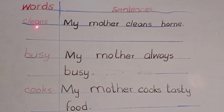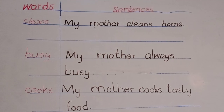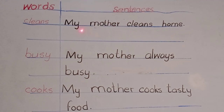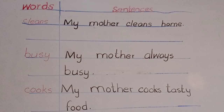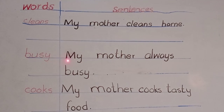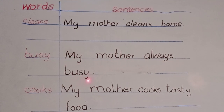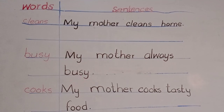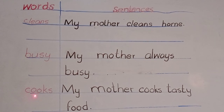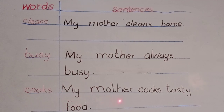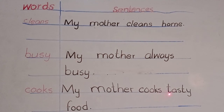Your first word is cleans. The sentence of cleans is: My mother cleans home. The other word is busy. What is the sentence of busy? My mother always busy. And the third word is cooks. The sentence of cooks: My mother cooks tasty food.